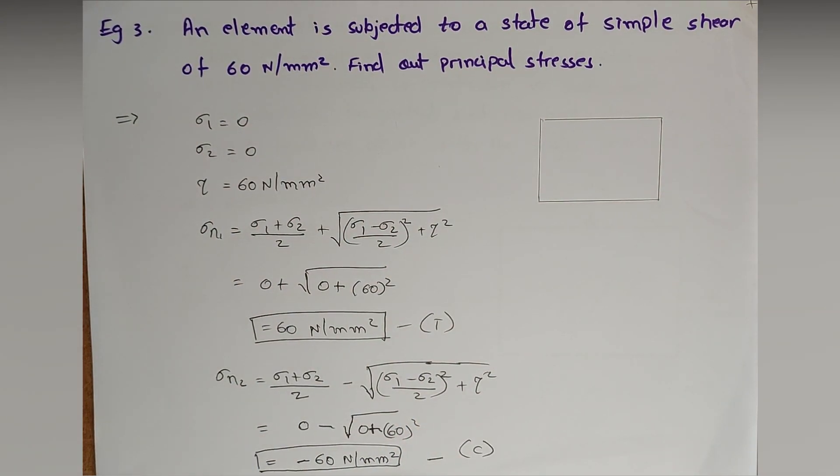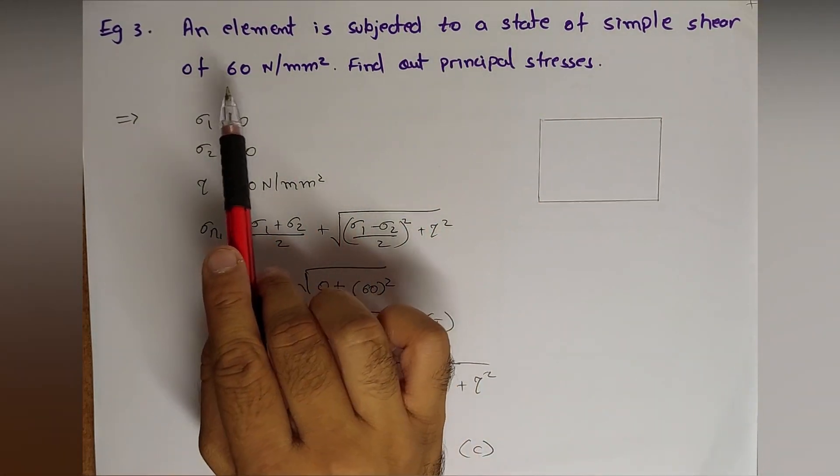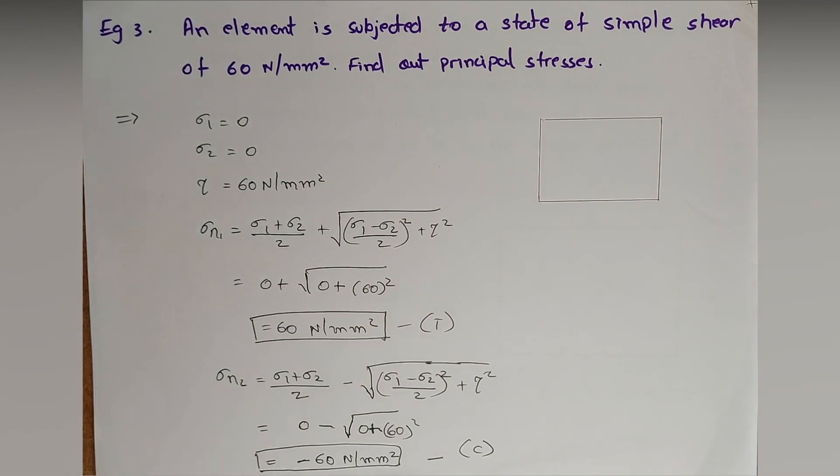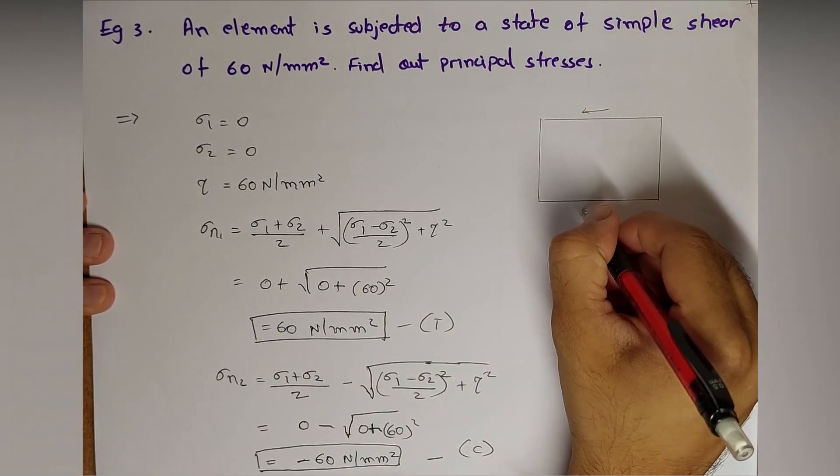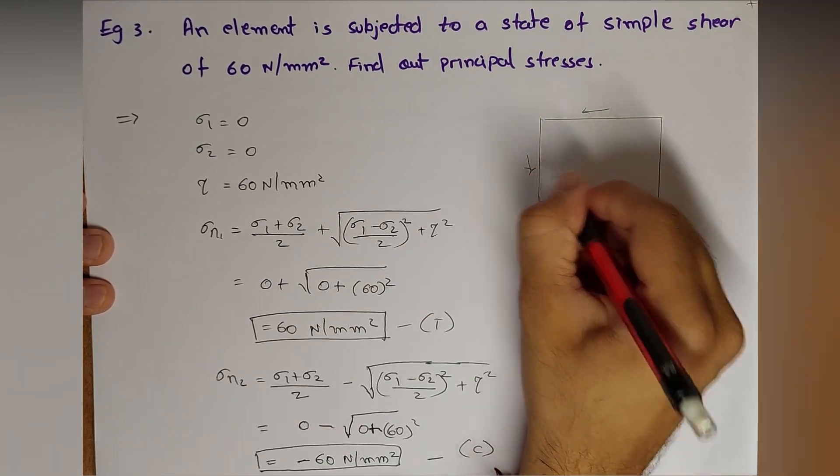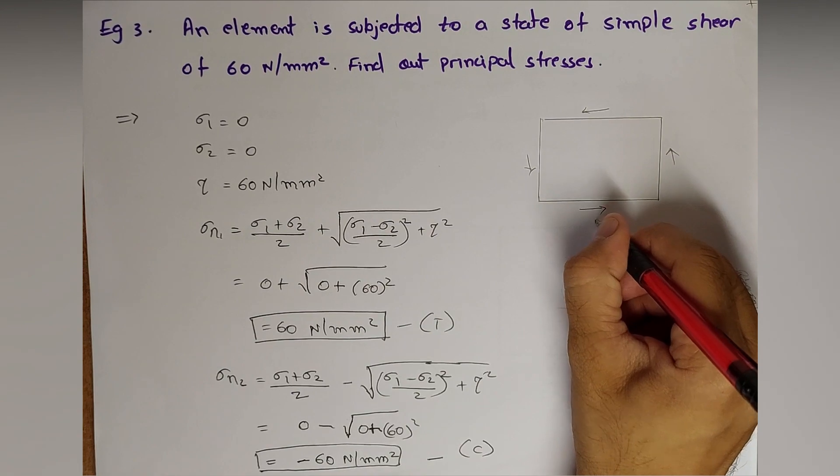Now it is subjected to a state of simple shear of 60 Newton per mm square. A shear force is acting. We would say in any direction we are not knowing the direction, but here shear tau is 60 Newton per mm square.